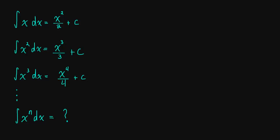On the screen here you have some antiderivatives of x to powers. We have the antiderivative of x is x squared over 2 plus c. The antiderivative of x squared is x cubed over 3 plus c, and so on. x cubed is x to the fourth over 4 plus c.